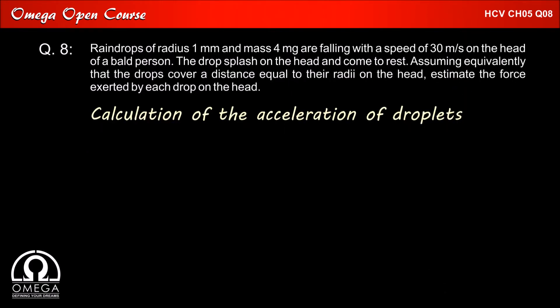First, let's calculate the acceleration of the droplets. In the question, it is given that initial speed u is 30 meters per second. Since the water droplets come to rest after collision with the head, final speed V is equal to zero. The displacement, as per the question, is equal to the radius of the water droplet, that is 1 millimeter, which is 0.001 meter.